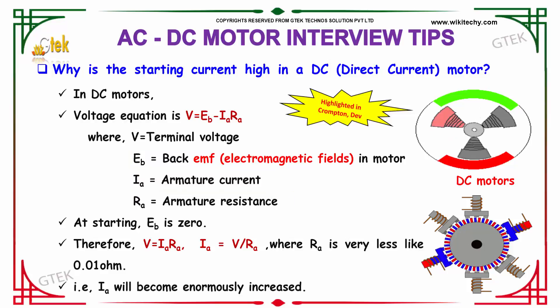At starting, the EB, that is the back EMF in motor, will be zero. Therefore, V equals IA into RA, which can also be said as IA equals V divided by RA.